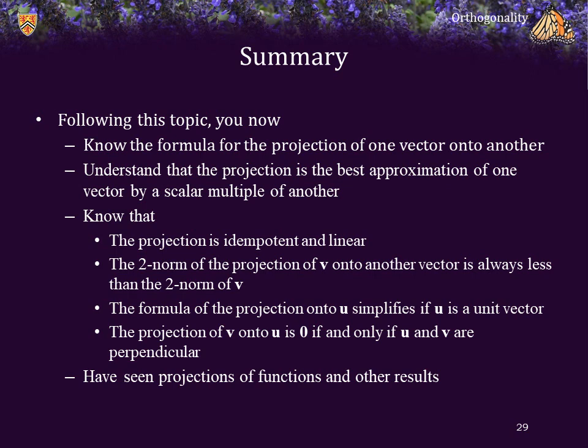In summary: you now know the formula for projecting one vector onto another as the best scalar-multiple approximation. The projection is idempotent and linear; the 2-norm of the projection is always less than or equal to the 2-norm of v; the formula simplifies if u is a unit vector; the projection is zero if and only if u and v are perpendicular; and you have seen projections applied to function spaces and average values.